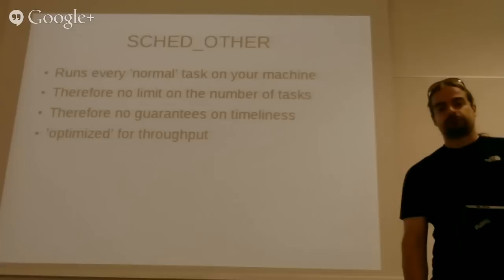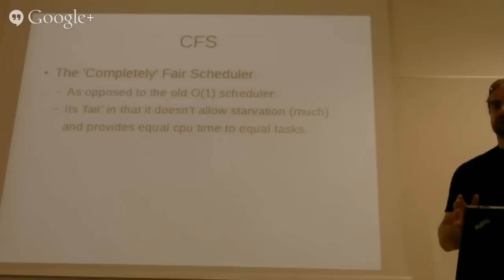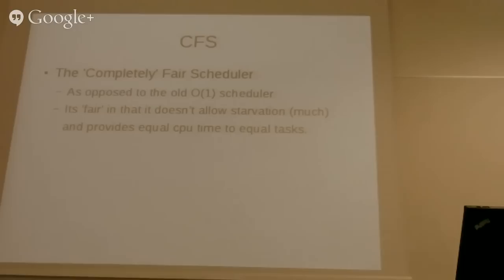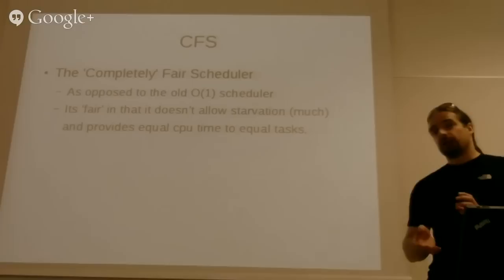So it's a completely fair scheduler, although you can argue about the complete part of it. But as opposed to the old O(1) scheduler, which was a heuristic nightmare with cliff edge behavior and all kinds of funny cases, this one is pretty good. It's mostly fair in that it doesn't allow starvation. There are some edge cases, but they're very hard to trigger. And it provides equal CPU time to equal tasks under most normal situations.